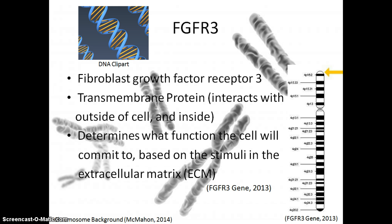FGFR3, or fibroblast growth factor receptor 3, is another protein produced from chromosome 4. It is a transmembrane protein, which means it interacts with both the outside and inside of the cell by being embedded in the plasma membrane. It determines what function the cell will commit to based on stimuli in the extracellular matrix. This gene is also found on the telomere region of the short end of chromosome 4.